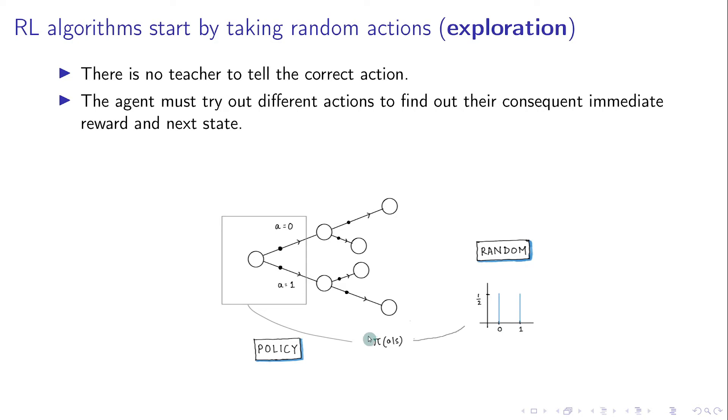The function that gives us the probability of taking an action A, given state S, is called a policy, and is denoted by the Greek letter Pi. The random policy looks like this for all states.